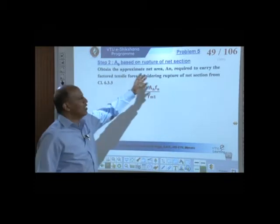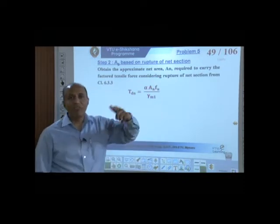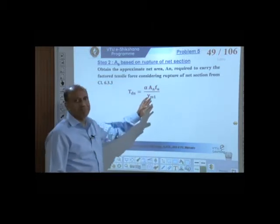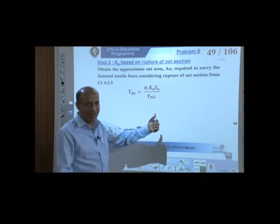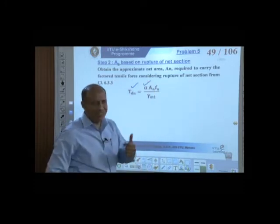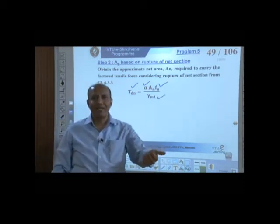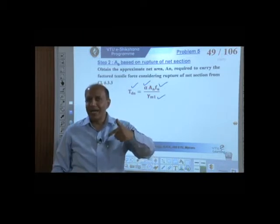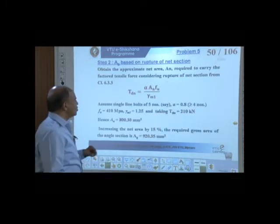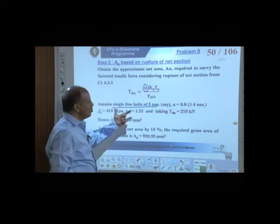Now let us go to the second failure criteria — net section rupture. We use the same expression used in the previous problem. This expression gives the factored load. We assume 5 bolts in a single line. Alpha is 0.8 for 5 bolts — these values are available in IS 800 clause 6.3.3. We are given fu and γM1. Substitute and simplify to get An = 800.30 mm².